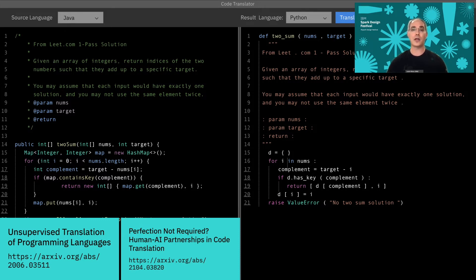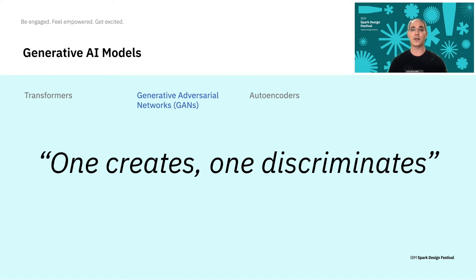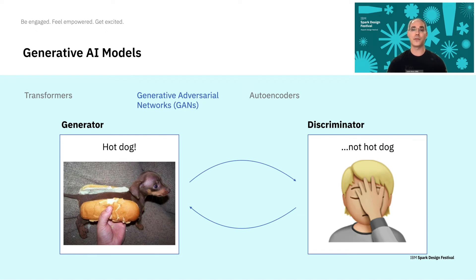Moving on to our next kind of generative model, let's talk about GANs. The easiest way to remember how GANs work is like this: one creates and one discriminates. There are actually two models here — the generator and the discriminator. The job of the generator is to create things that fool the discriminator.